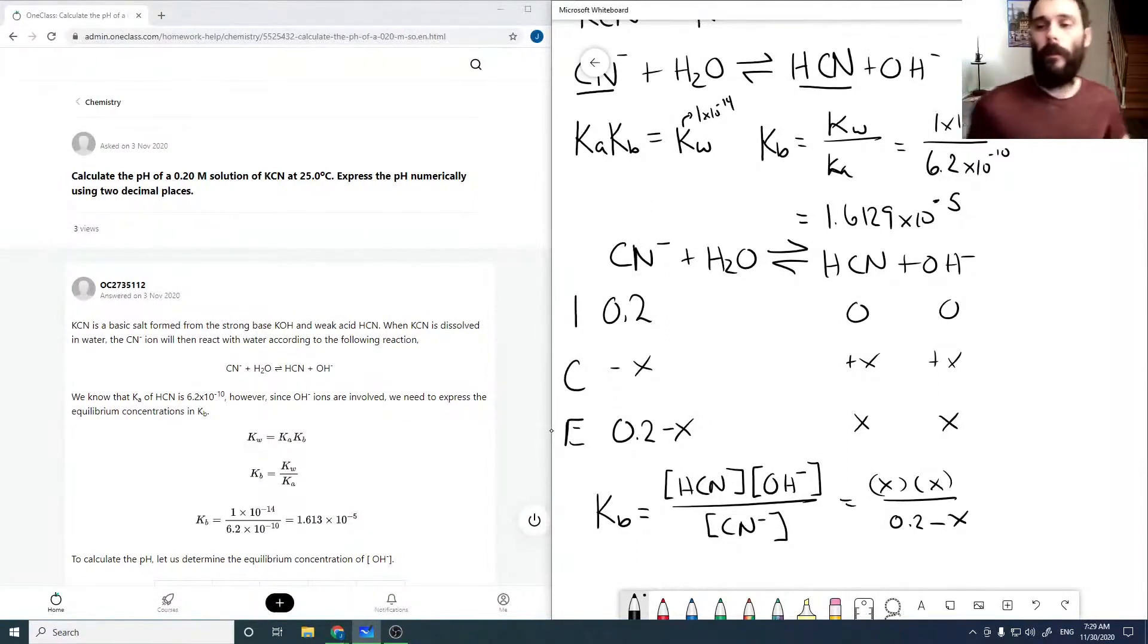As we've done many times before, to simplify things, I'm going to assume that this is just 0.2, as x is going to be very small because our Kb is also very small.